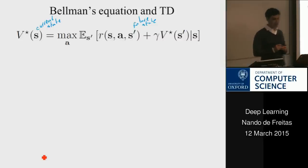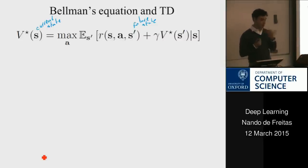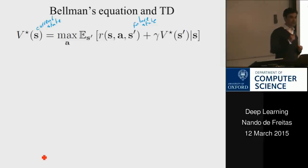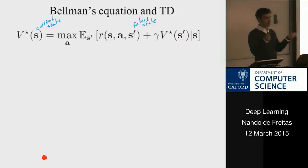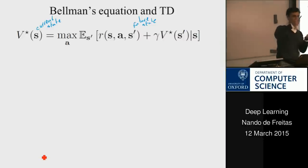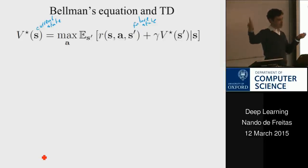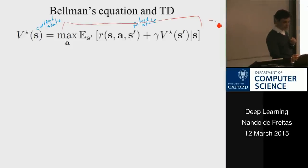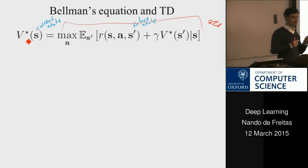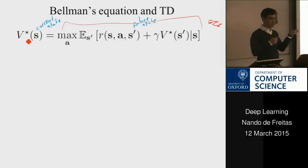The first reinforcement learning algorithm we get from this is temporal differences (TD). The algorithms for RL are very similar to SGD. In SGD we have the expectation of the derivative of a cost with respect to the data distribution — the expectation of the gradient equals zero. The difference here is that instead of equating to zero, we equate to a function. But we can proceed just like in SGD and derive an online algorithm.